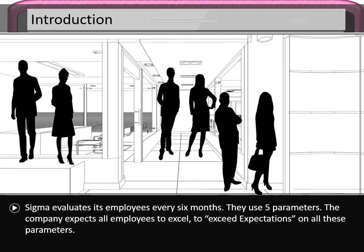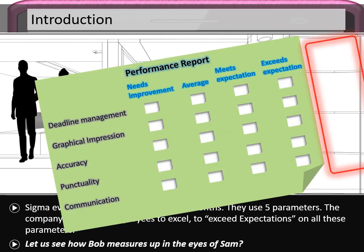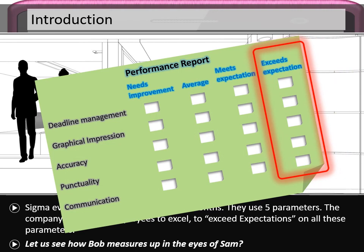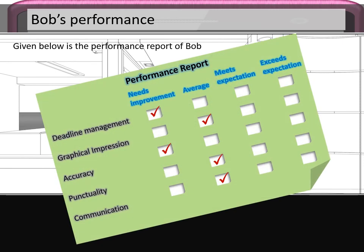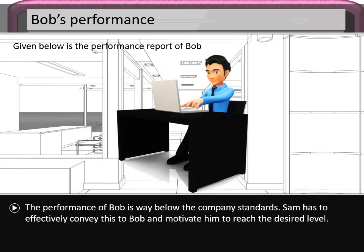Sigma evaluates its employees every six months using five parameters, and the company expects all employees to exceed expectations on all these parameters. Bob's performance report shows deadline management needs improvement, graphical impression is average, accuracy needs improvement, punctuality average, and communication average — well below company standards. Sam has to effectively convey this to Bob and motivate him to reach the desired level.